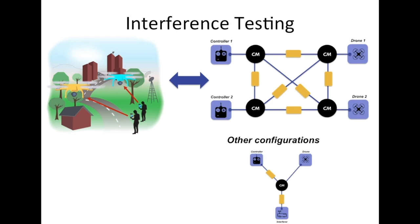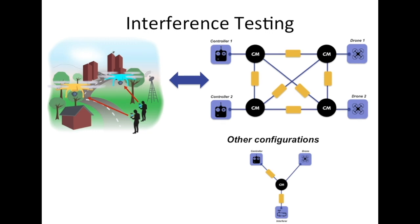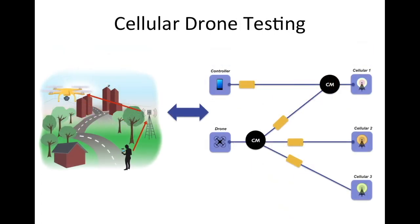Obviously there are other configurations as well that you can test. You may tell, I want to test the performance of the drone when I have a Wi-Fi interferer. And as you can imagine, if your drone is running on Wi-Fi, there are a lot of sources of interference. Just the access point you have at home could be a source of interference. The last scenario that we are seeing a lot is actually cellular drones. Drones that talk to the controller through a cellular network.